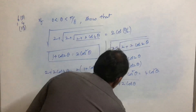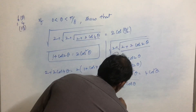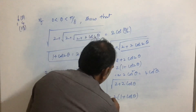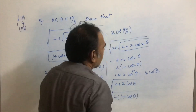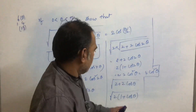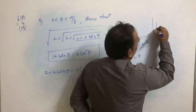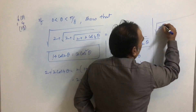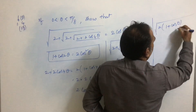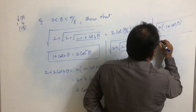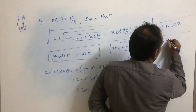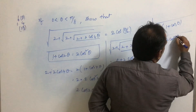Now take 2 common from 2 + 2cosθ. This gives 2(1 + cosθ). I will write it over here: √(2(1 + cosθ)). This can be simplified further since 1 + cosθ = 2cos²(θ/2).